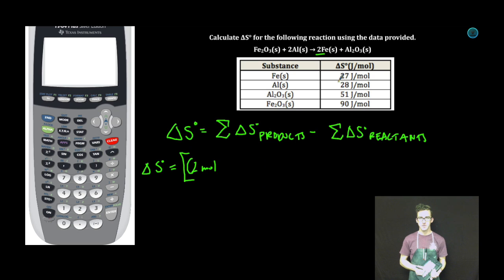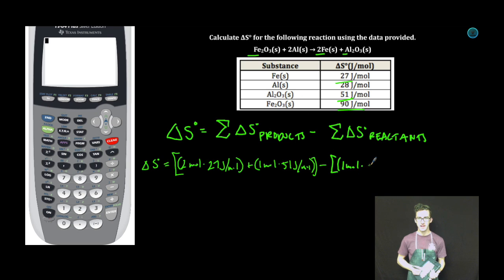Two moles of iron plus one mole of aluminum oxide minus one mole of iron three oxide plus two moles of aluminum. Let's hit up our good friend the calculator.